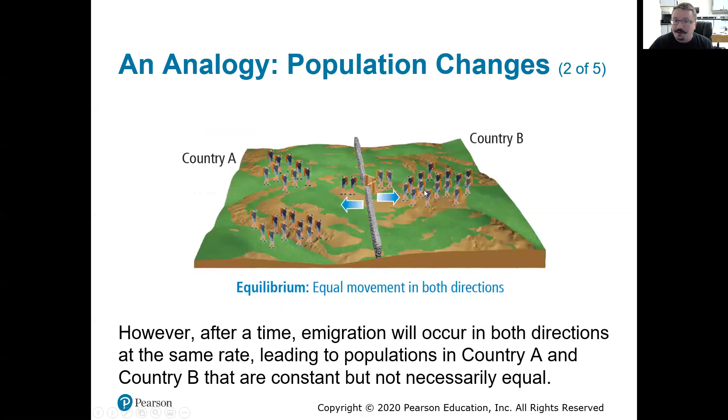Well at some point, maybe when the populations are equal relative to the amount of land mass or whatever, the immigration is going to be equal. We might see that two people are always going from country B to A and vice versa. Now the overall numbers, we may see that country B has less people total than country A, but the rate of immigration back and forth is equal. Exact same thing.